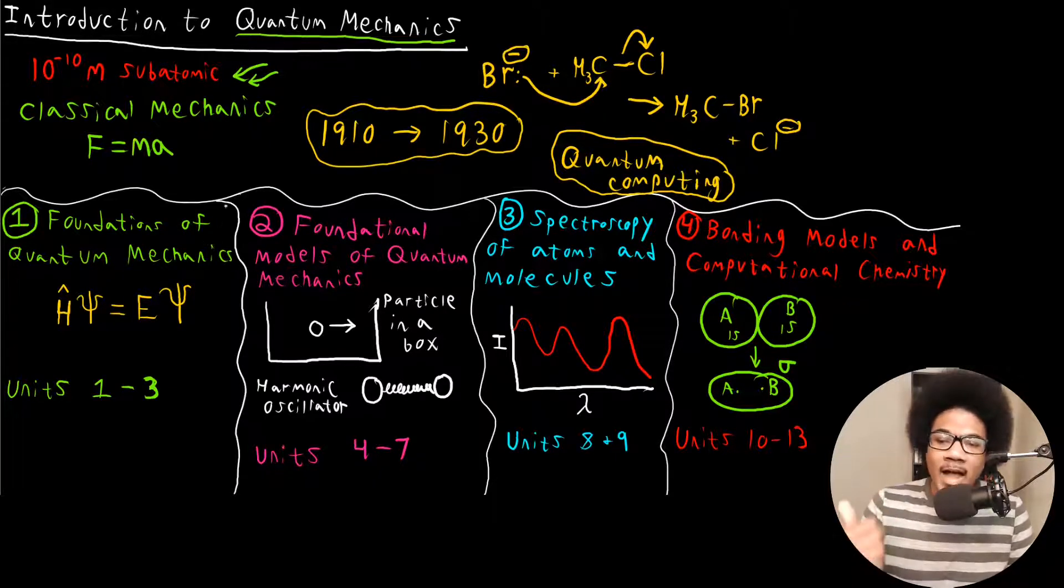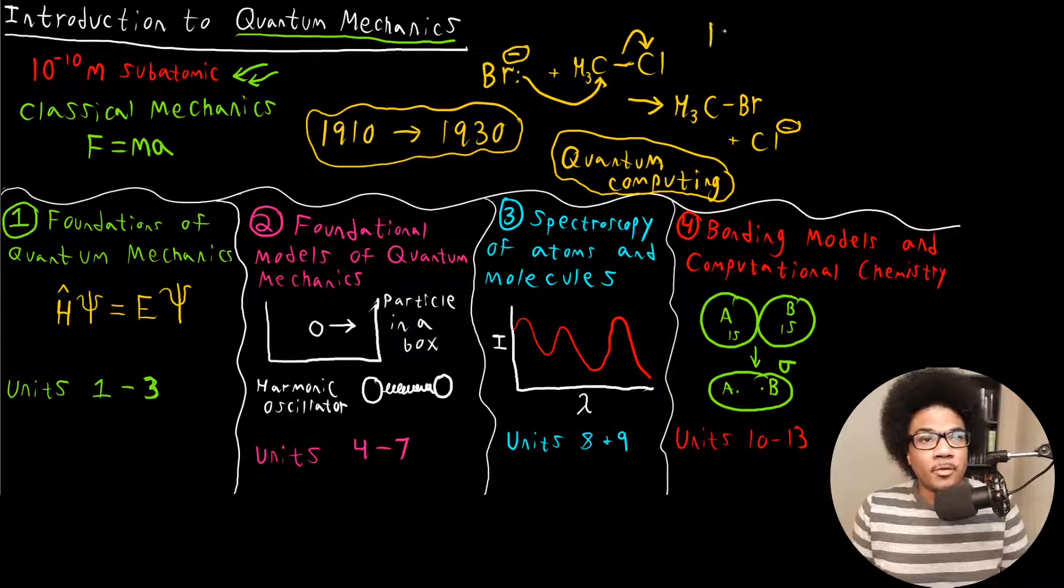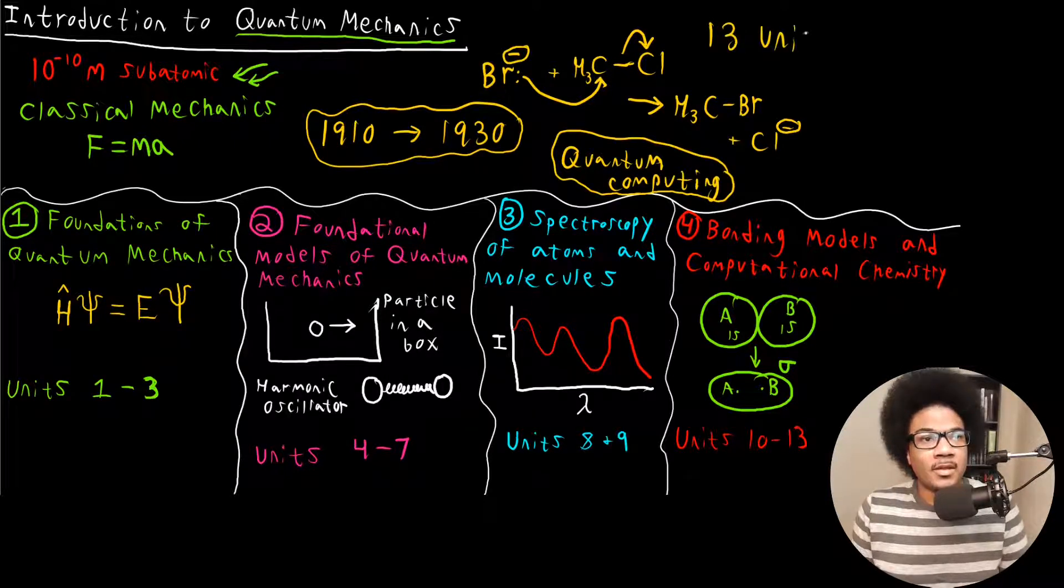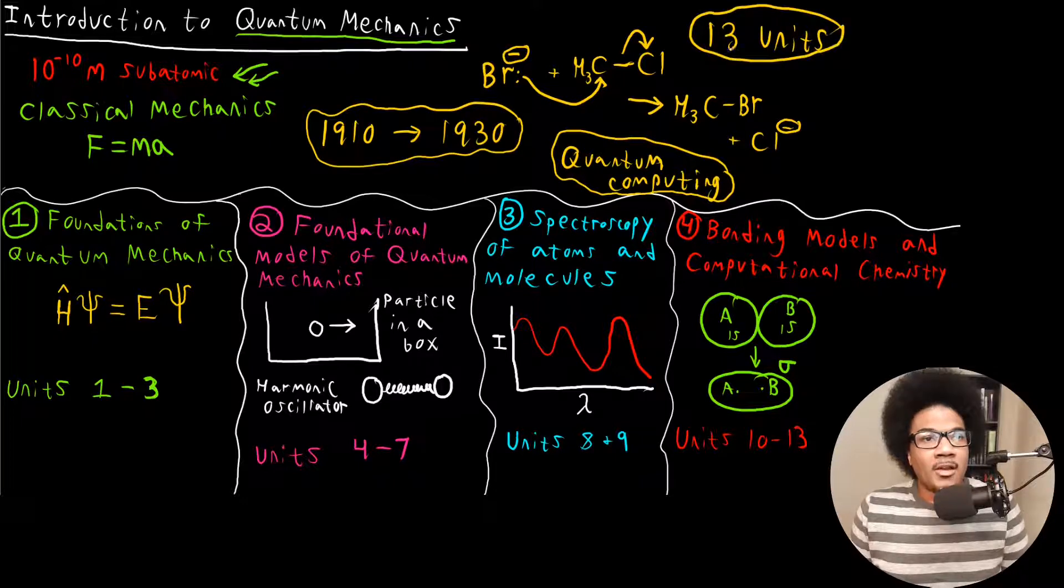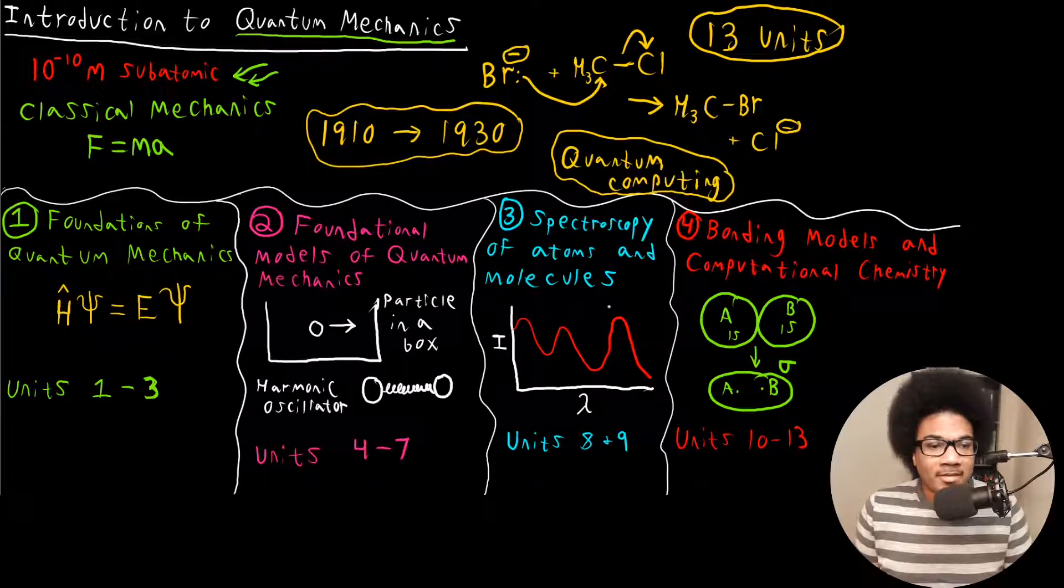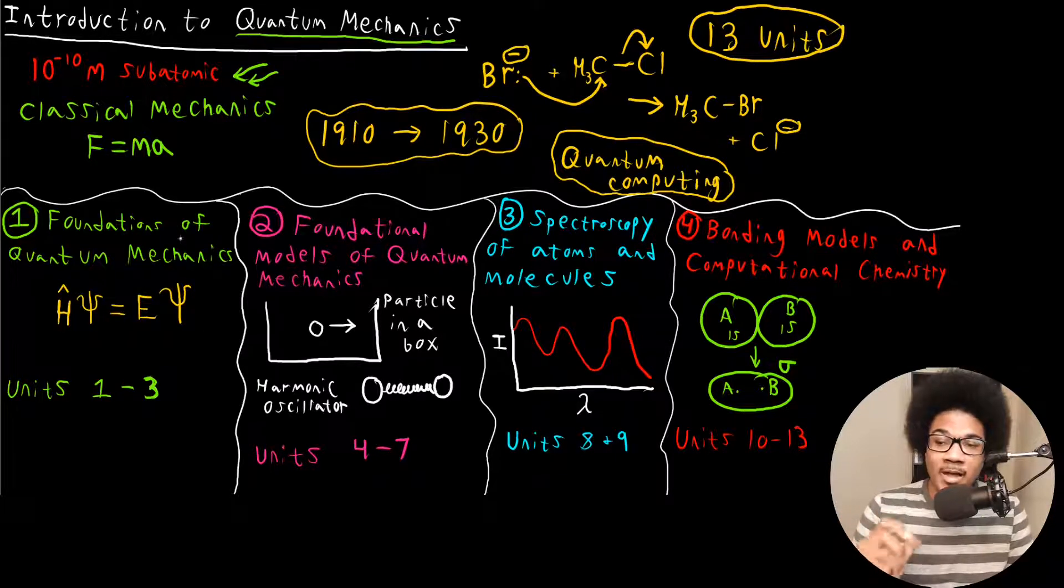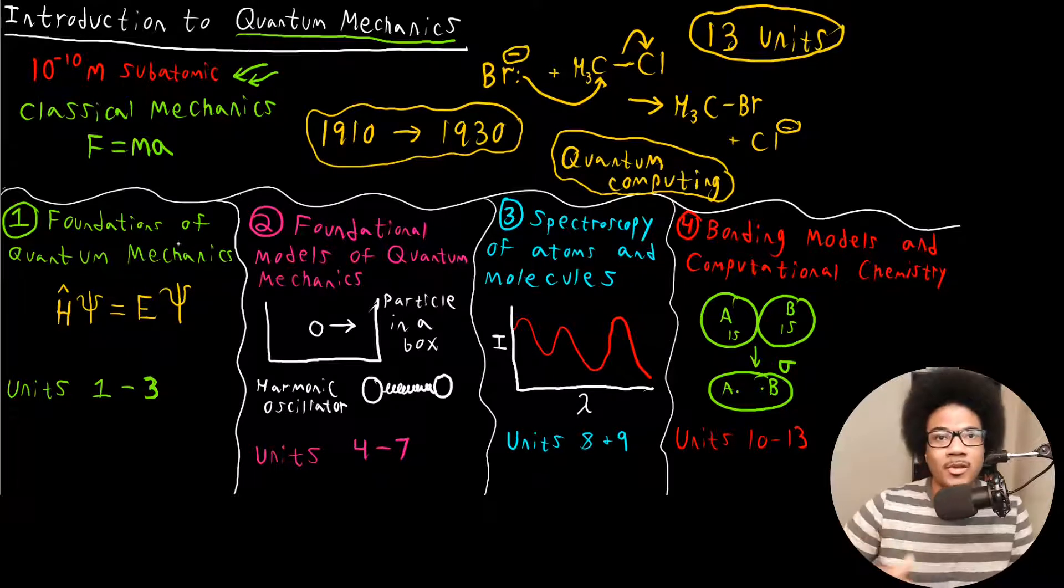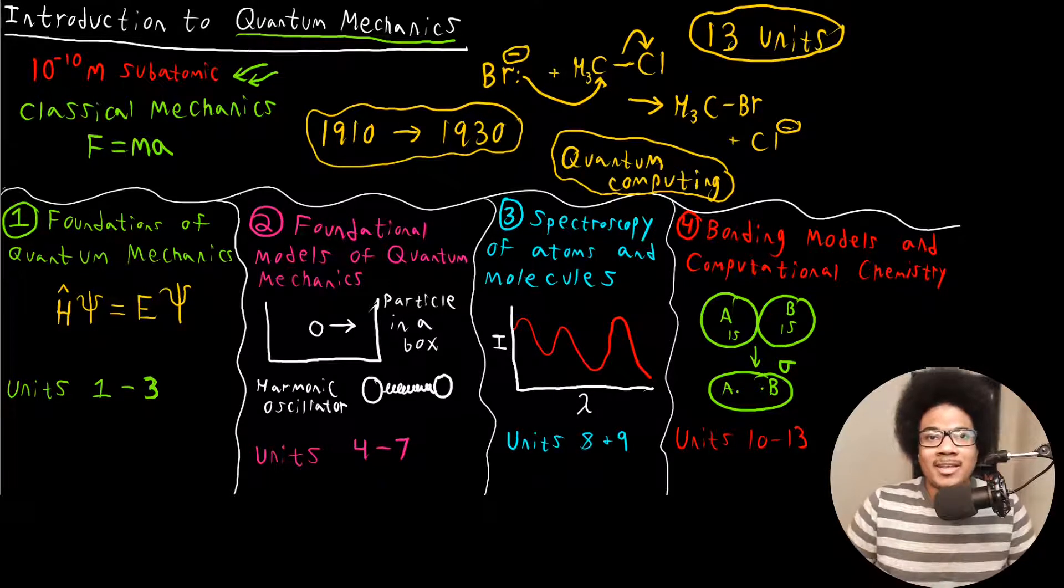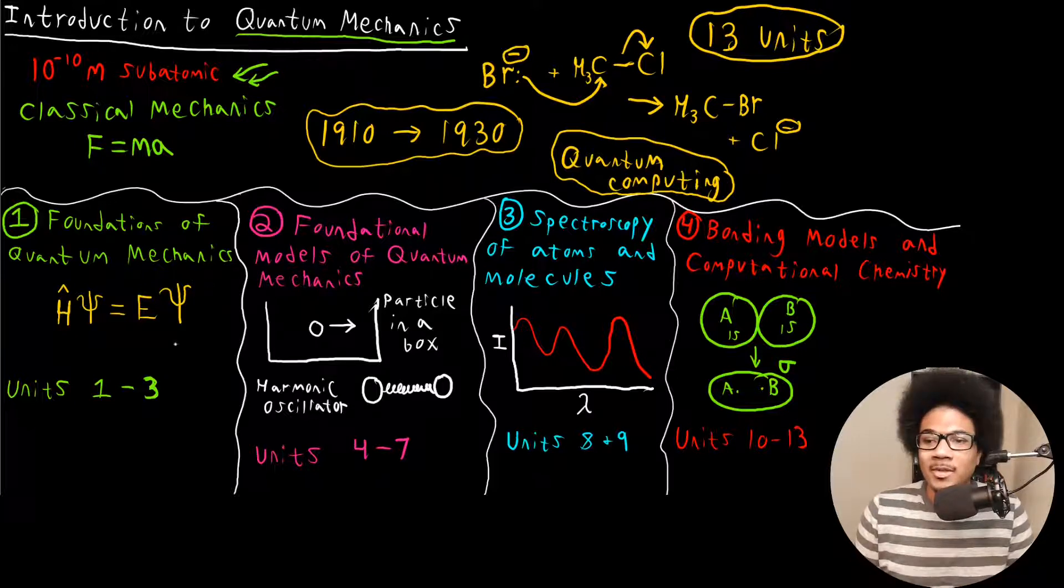Okay, so an overview of how this class is going to go. There are going to be 13 total units. And you can basically split up the units into these four thematic blocks that I've put down here. The first place where we're going to start is the foundations of quantum mechanics. So before we can start using it and talk about it in any detail, we have to establish the foundations of what this field is.